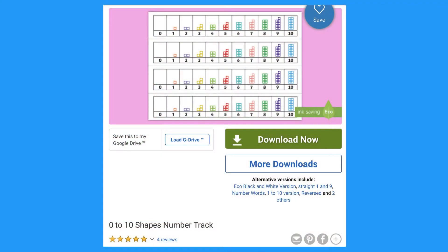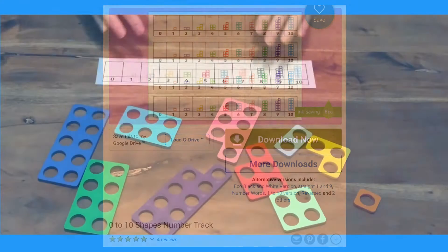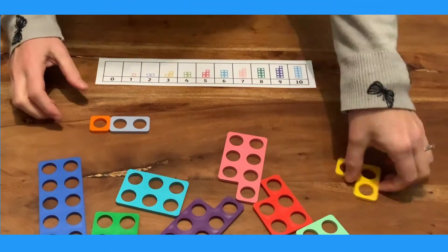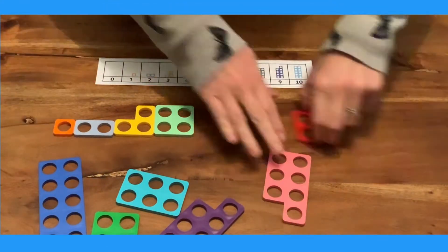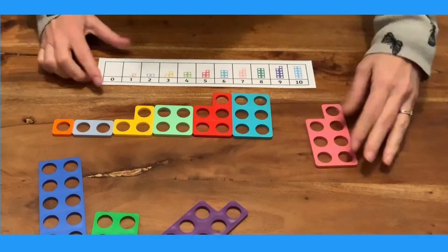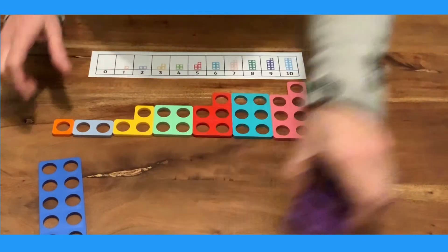These number tracks can be used in all sorts of different ways. Children could use them as a guide to make their own number track. You may have your own plastic number shapes or you can use Twinkl's cutout number shapes.